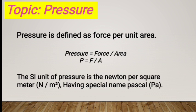Pressure is defined as the force per unit area. The pressure formula among us is force divided by area. Pressure is denoted by P, force is denoted by F, and area is denoted by A.